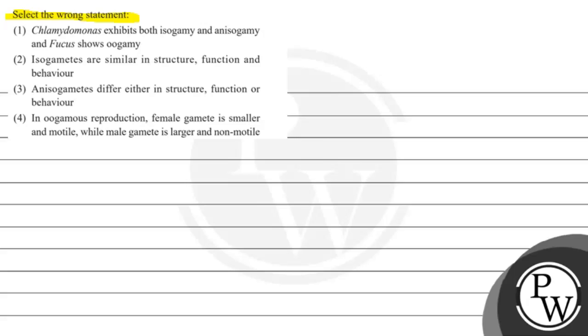In oogamous reproduction, female gamete is smaller and motile while male gamete is larger and non-motile. From this, we will tell you the wrong statement.